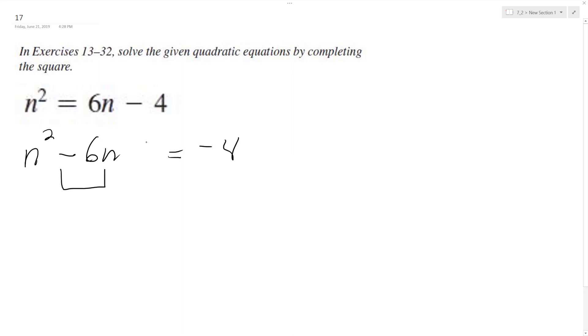So completing the square, take half the middle term, negative 3n squared. Negative 3 times negative 3 is 9, add it to both sides. We get n squared minus 6n plus 9, which is a perfect square: n minus 3 squared. Negative 4 plus 9 is equal to 5.